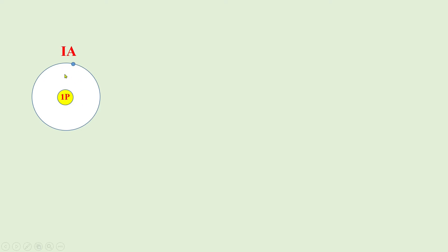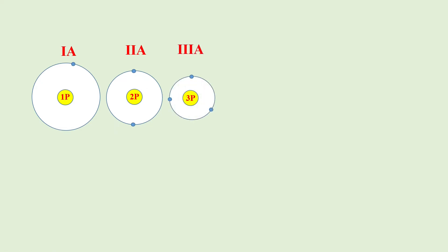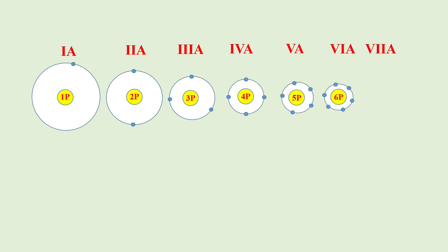If an element is in group 1a, then it has 1 electron in its outer shell, attracted by 1 proton of its nucleus. In case of 2a, 2 electrons in the outer shell. In 3a, 3 electrons; 4a, 4 electrons; 5a, 5 electrons; 6a, 6 electrons; and 7a, 7 electrons.